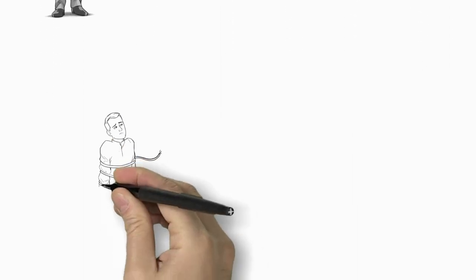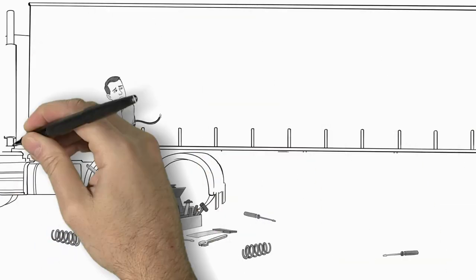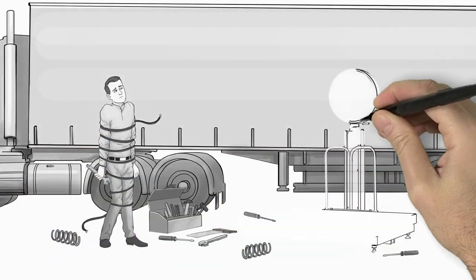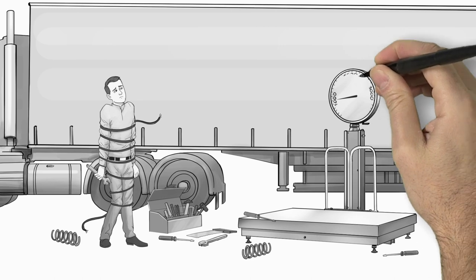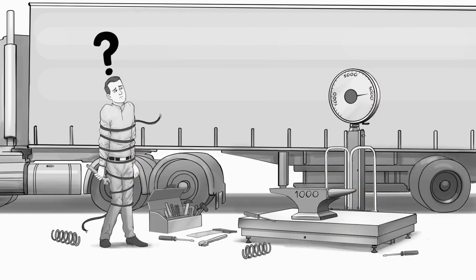So you decide to add an onboard scale and after hours of running wires and installing parts, you discover it's so inaccurate it has to be calibrated practically every load and even then it can be 3 to 10% off.